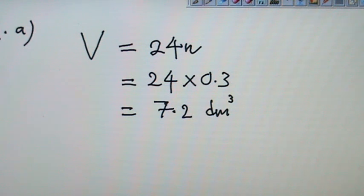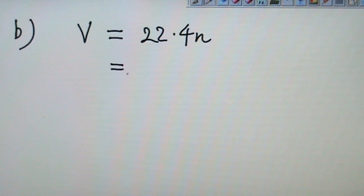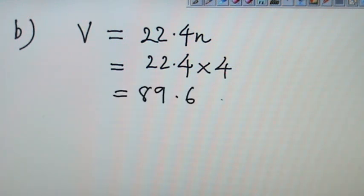How about B? Let's try B. B is 4 moles of helium gas measured at STP. 4 moles of helium gas measured at STP. So volume at STP, 22.4 and they give 4 moles of helium gas. So 22.4 times 4. So this one you get 89.6 dm³.